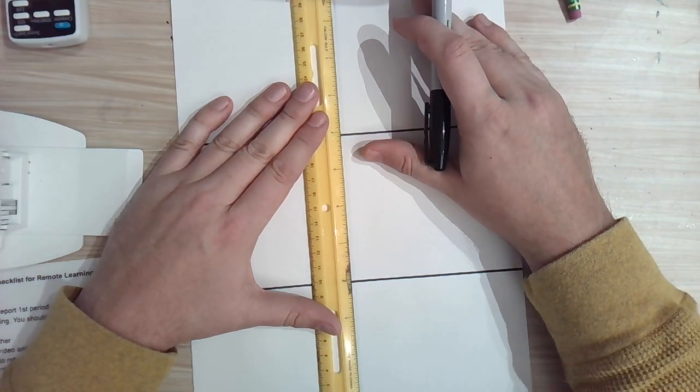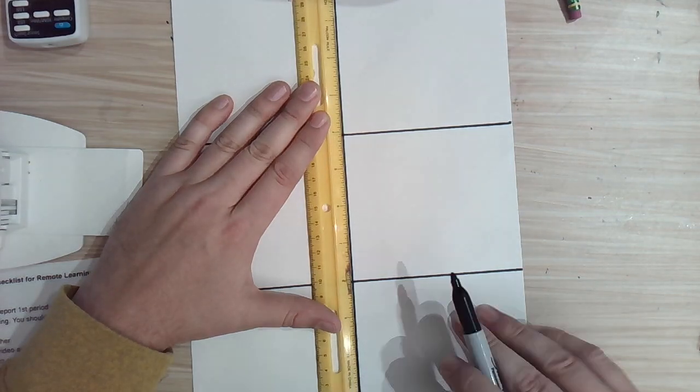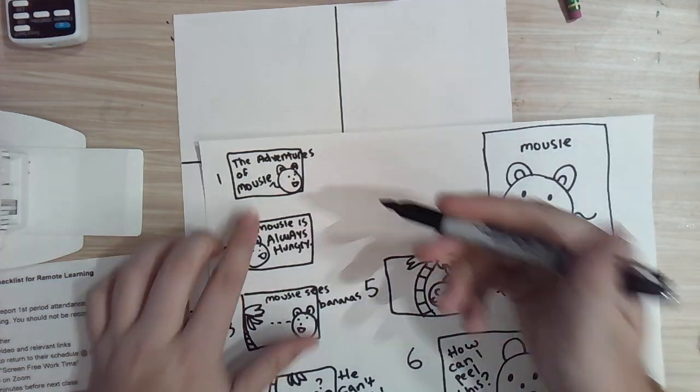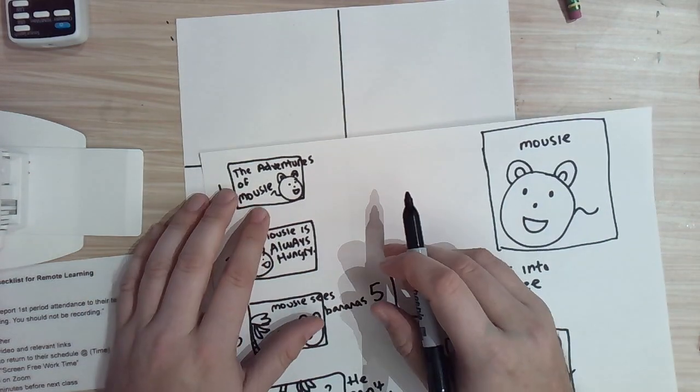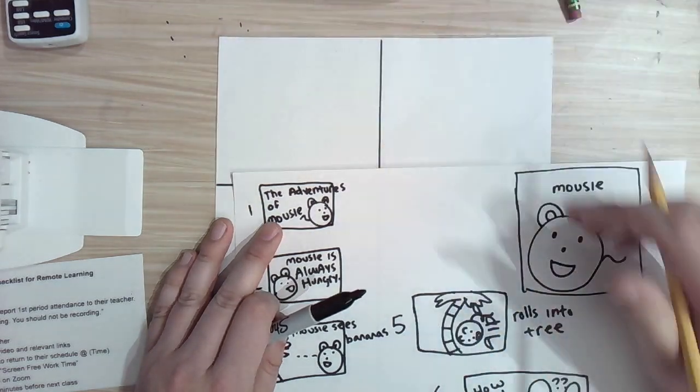Now the next thing I'm going to want to do is figure out which pages need text. The Adventures of Mousy, that's pretty much just going to be, that's my title page, so that's all going to be text. That's fine.